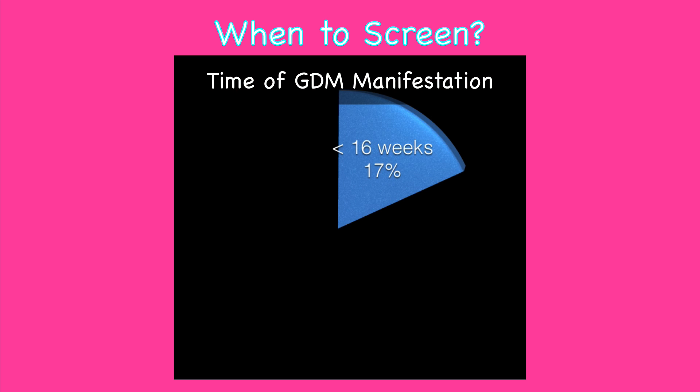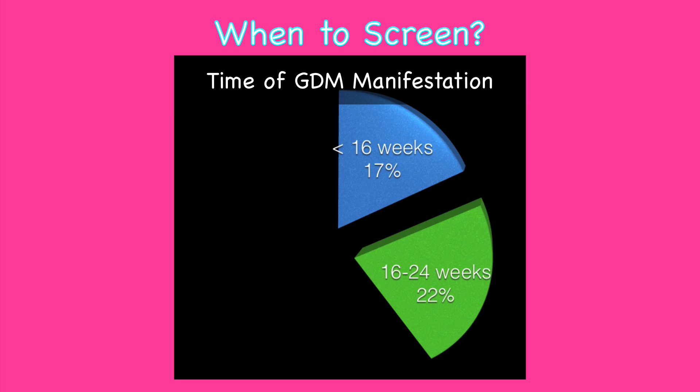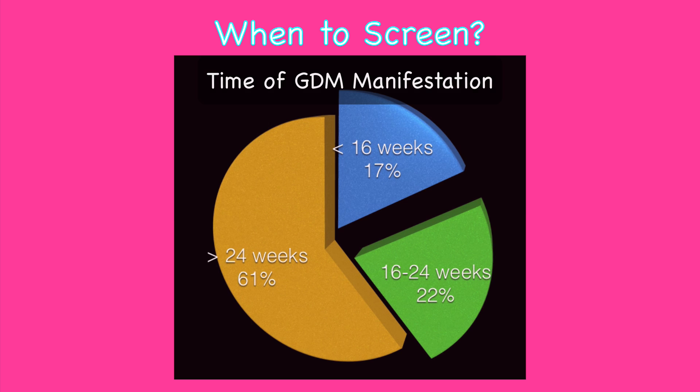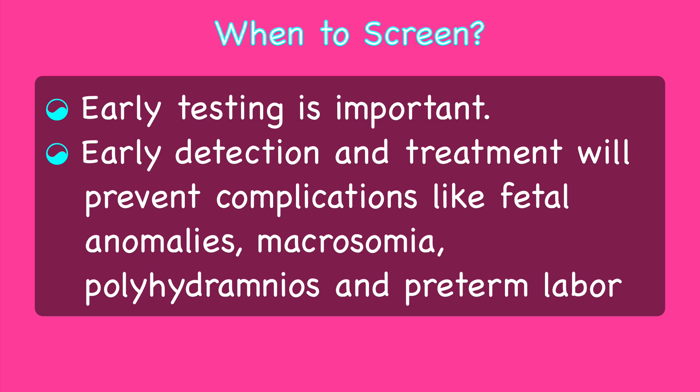To answer when to screen, one must first know when GDM manifests. GDM can manifest in any trimester of pregnancy. Studies have shown that in 17% of cases it occurs prior to 16 weeks, in 22% it can manifest between 16 to 24 weeks, and in 61% of cases it manifests after 24 weeks. This means that in 38% of patients, GDM develops early in the first and second trimester. Early testing is therefore important, as early detection and treatment will prevent complications like fetal anomalies, macrosomia, polyhydramnios and preterm labor.